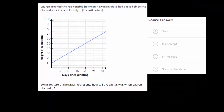And the main idea is just to get comfortable with the graph before fully trying to answer the question. Lauren graphed the relationship between how many days had passed since she had planted a cactus and its height. So this x axis here is how many days since she planted it. So at day zero, it looks like the cactus had a height of 10 centimeters. And as the days increased, the height of the cactus grew in a linear fashion.